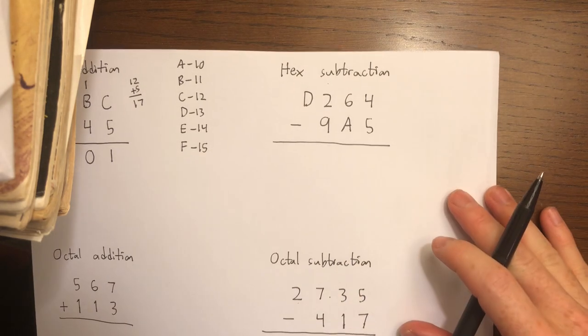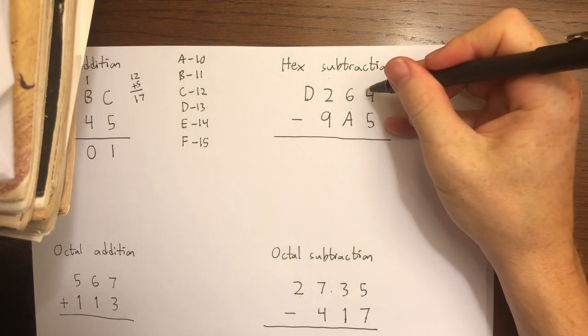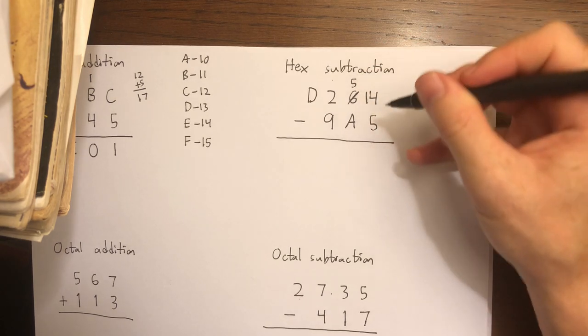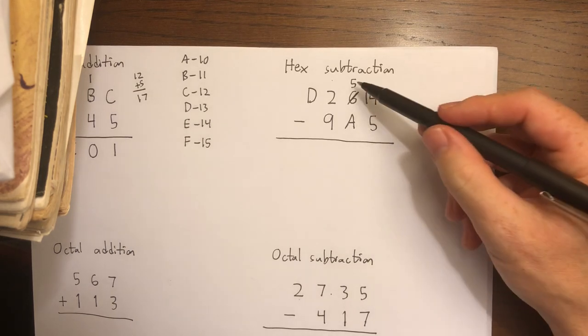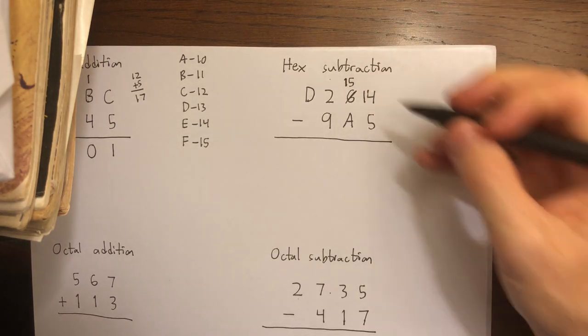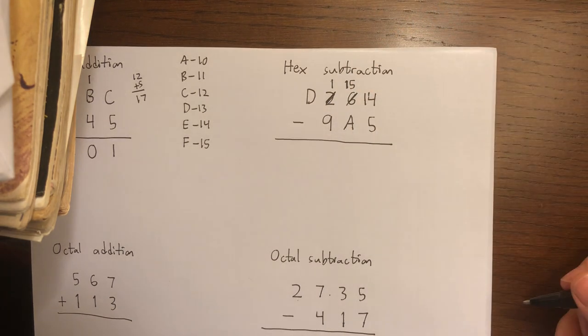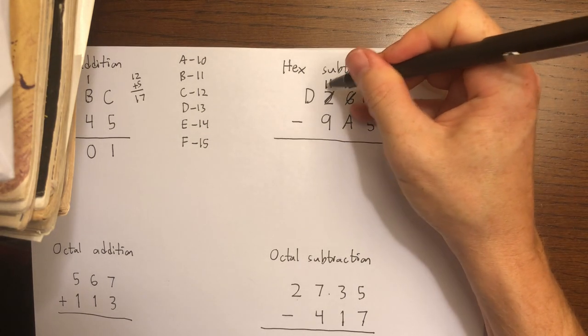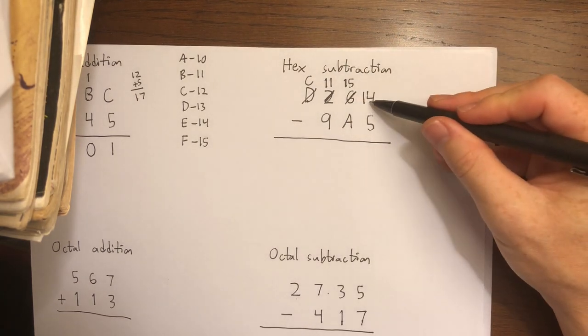Now for some hex subtraction. 4 minus 5—the 4 is smaller than 5, so I'm going to carry in a 1 from the next column over, but that 1 actually carries a weight of 16. We'll need to remember that when we come back to do the subtraction. 5 minus A—again, the 5 is too small, so let's carry in a 1 from the next column over, which is going to turn this 2 into a 1. And then finally, 1 minus 9. That 1 is too small, so again we're going to carry in a 1 from the next column over.